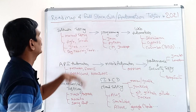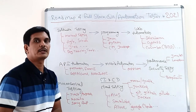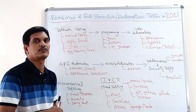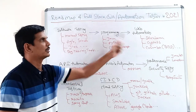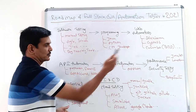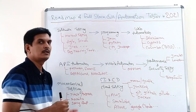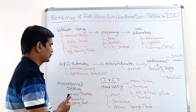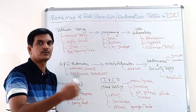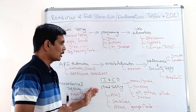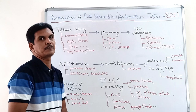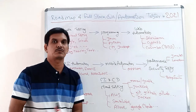So this is basically the roadmap of full stack QA or automation tester in 2021. Start with software testing concepts, then learn a programming language, then web automation, then API testing tools, then mobile automation, performance, security, or microservices testing. In the coming months, people are expecting more skills in API testing, microservices, CI/CD, and cloud environments. That's all for this video — thanks for watching, we'll see you in the next video.